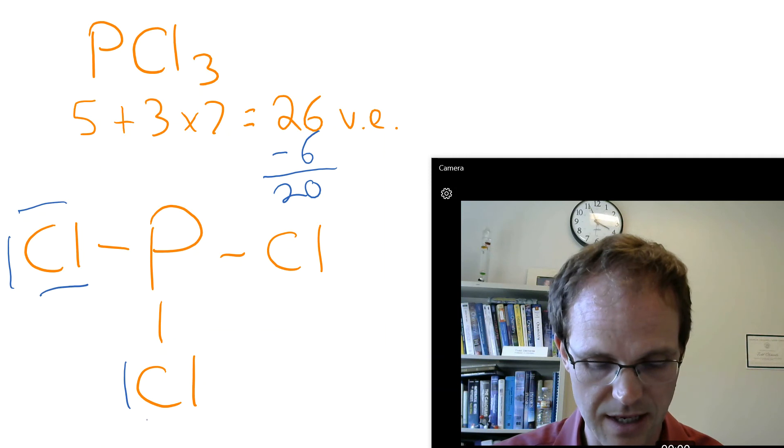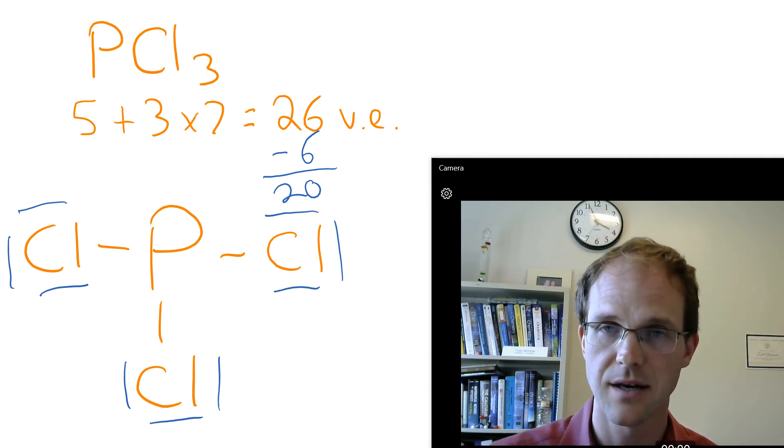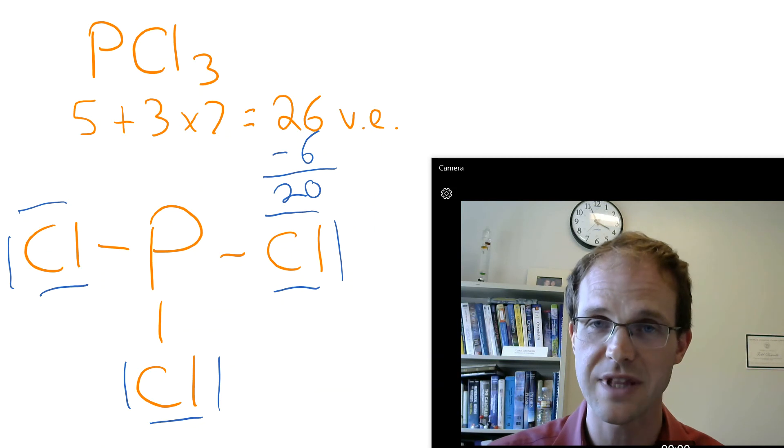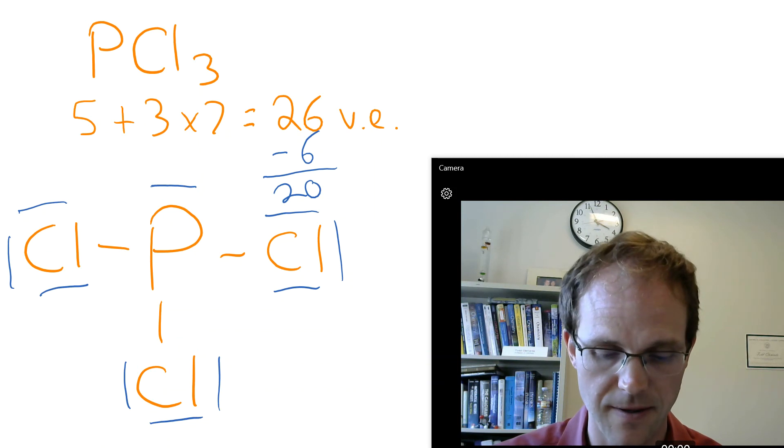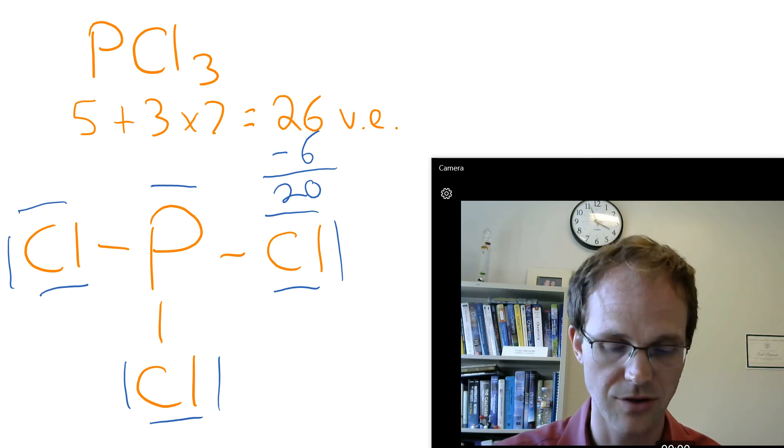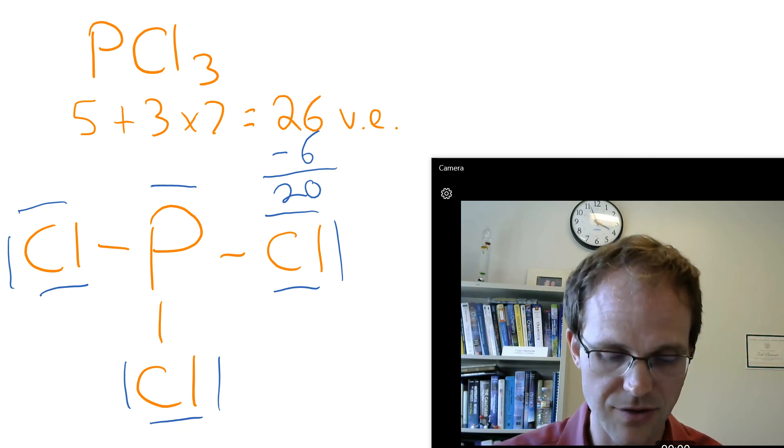So 2, 4, 6, 8, 10, 12, 14, 16, 18. Everybody's full. I can't put anything more on the outside. So what do I have to do? I now have to put them on the inside, and there's our 20 right there. Okay. Happiness check. Chlorines, they're all happy. They all see 4 pairs, a total of 8. Phosphorus, happy. Do we have the right number of electrons?